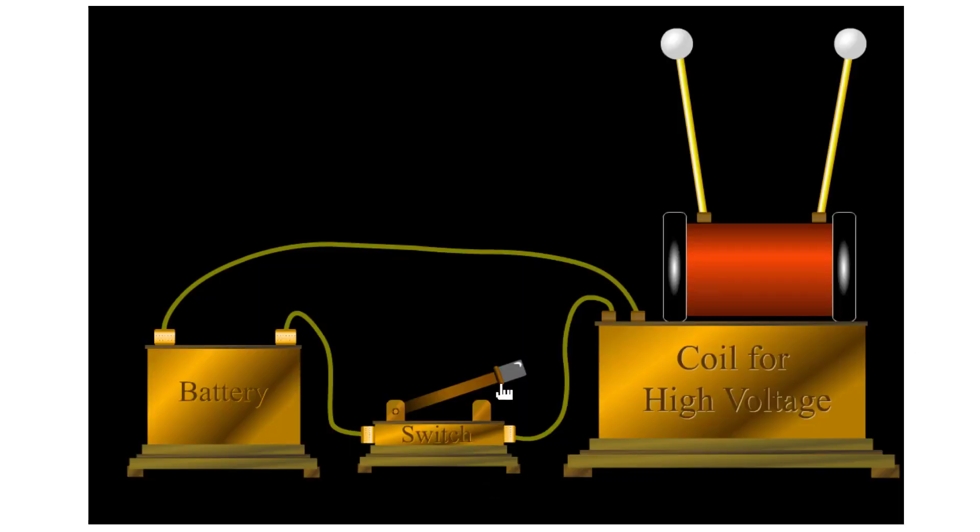If you have a high enough voltage, you can break down neutral air molecules into ions and make the air a conductor. And this is what happens with sparks and lightning.